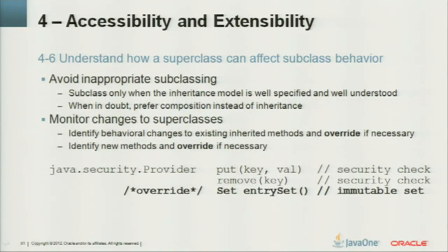What do we learn from that? Subclasses cannot guarantee encapsulation. The superclass may modify behavior of methods that haven't been overridden, and may add new methods — bypassing security checks enforced in subclasses. The fix: avoid inappropriate subclassing, subclass only when the inheritance model is specified and well understood, prefer composition over inheritance, and monitor changes to superclasses. Here, entrySet() was overridden to return an immutable set and the problem was resolved.